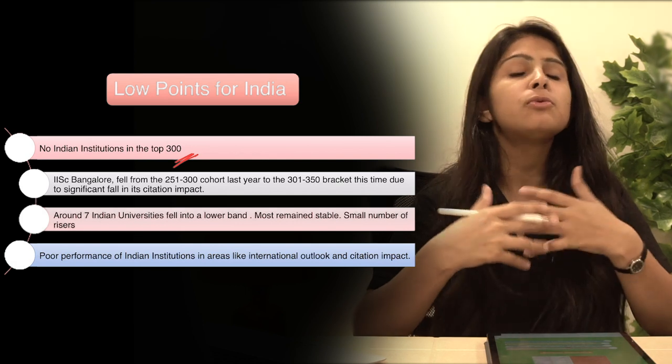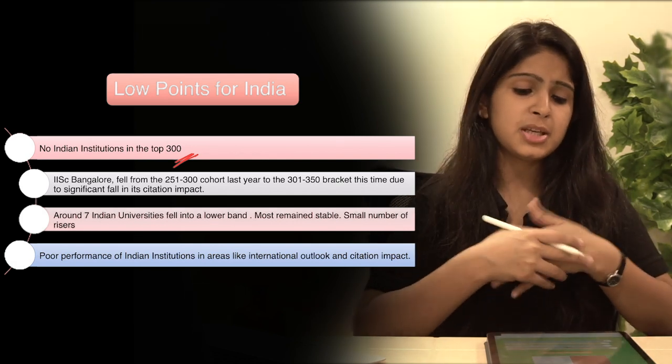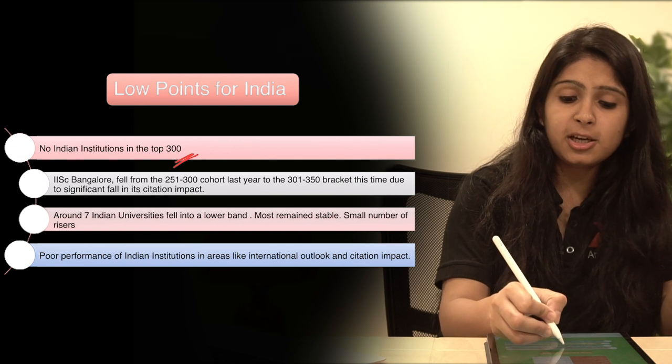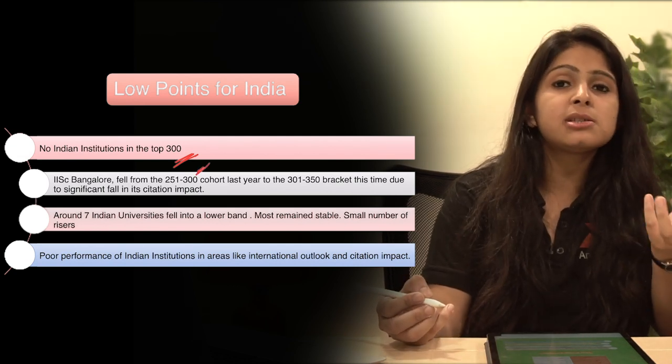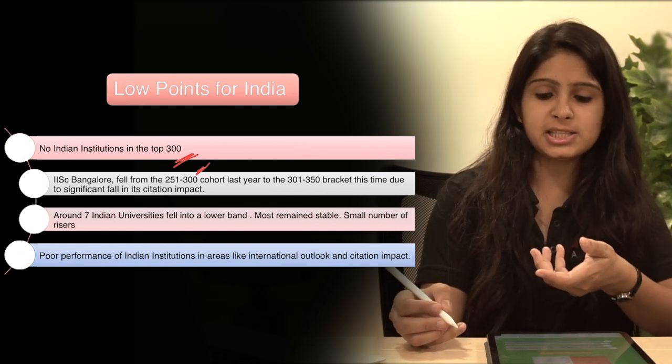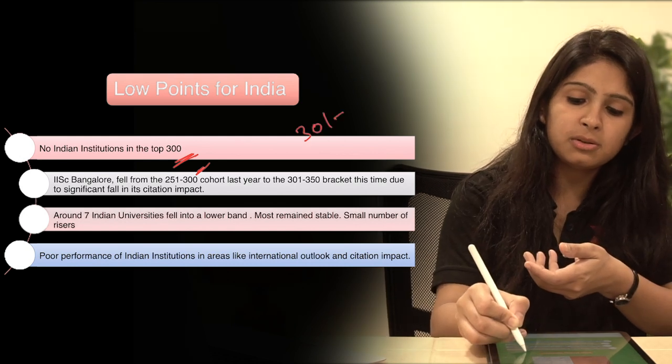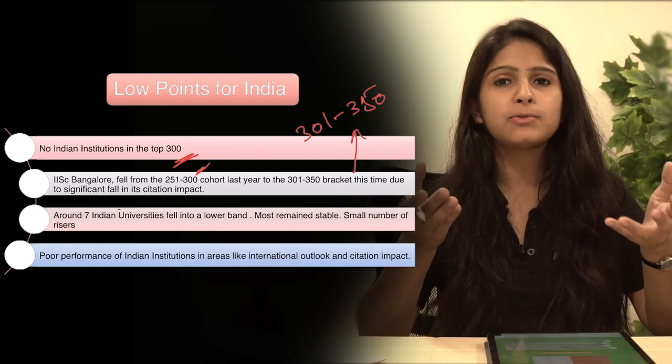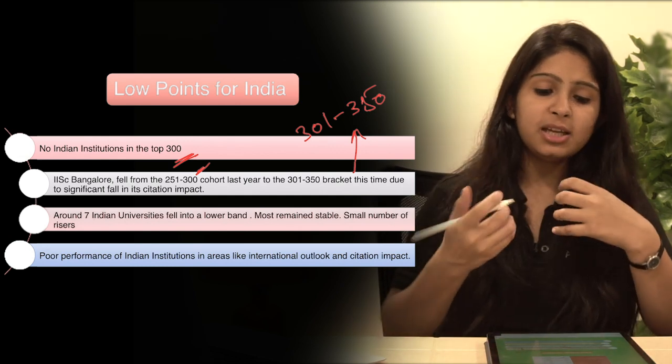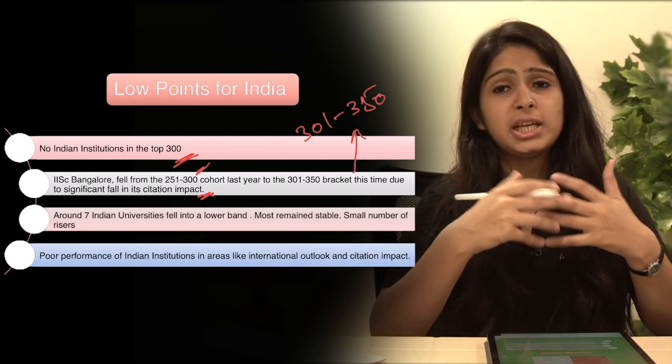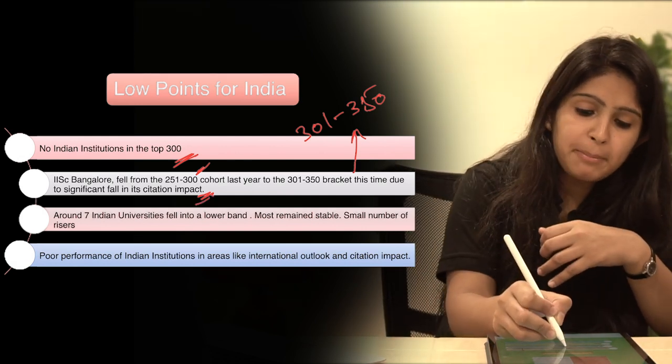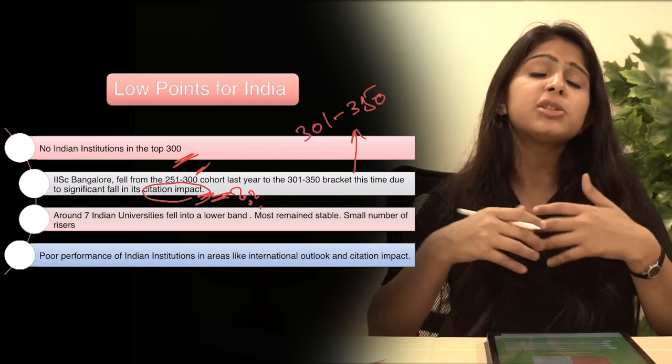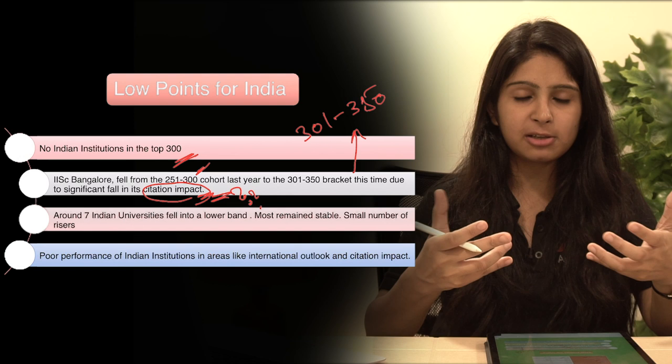The next point is Indian Institute of Science Bangalore. Its ranking which last year was 251 to 300 has now fallen to 301 to 350. So its ranking dropped slightly by 50 points. Indian Institute of Science ranking, the most important reason is that the citation impact of Indian Institute of Science is reduced. And what is the citation impact? We are going to study when we discuss the methodology which Times Higher Education uses, so don't worry about it, we will discuss this.